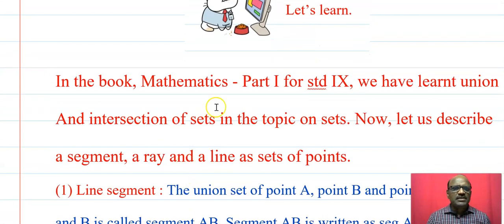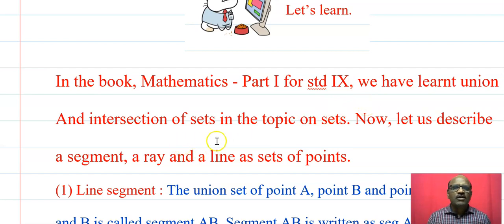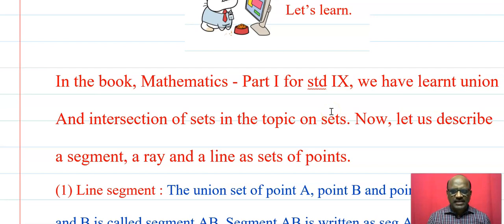In the book Mathematics Part 1 for the 9th standard, we have learnt union and intersection of a set in the topics on sets. Now let us describe a segment, a ray, and a line as a set of points.